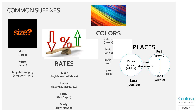We also have colors: chloro is green, leuco is white (as in leukocyte), erythro is red, and cyano is blue. For places: endo or intra means inside or within. The opposite of endo or intra is extra, which means outside — not additional. Peri means surrounded. Inter means between. Trans means across.